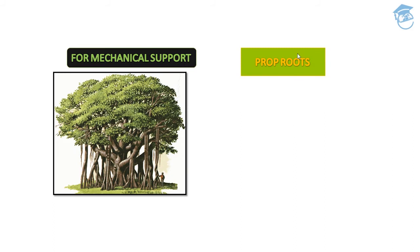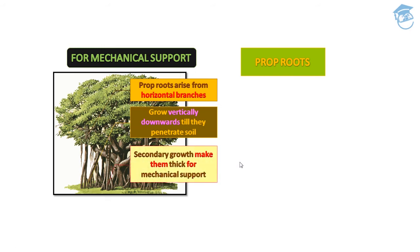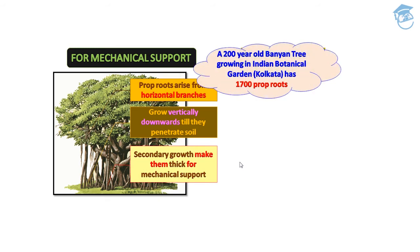For mechanical support: prop roots are a modification of adventitious roots. These roots provide mechanical support to large plants such as the banyan tree. Prop roots arise from the horizontal branches and grow vertically downward until they penetrate the soil. Secondary growth makes them thick for mechanical support. A 200-year-old banyan tree in the Indian Botanical Garden has 1700 prop roots.